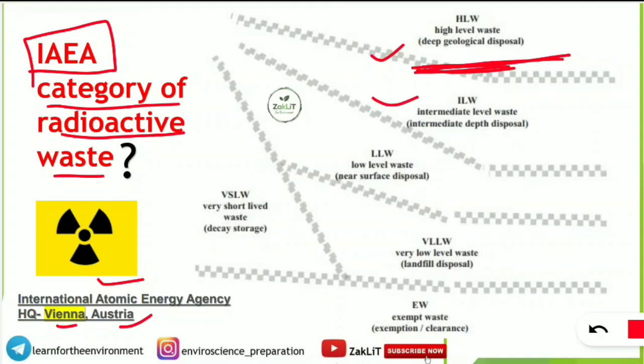The second category is ILW, that means Intermediate Level Waste. These radioactive wastes are disposed of at intermediate depth in the earth — not as deep as HLW, but at intermediate depth. The third category is LLW, Low Level Waste.